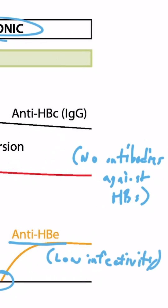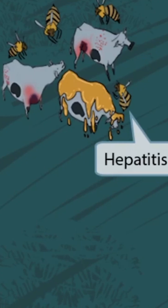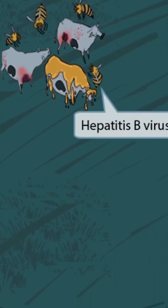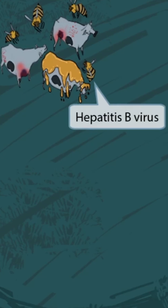Now let's dive into the image mnemonic to help you memorize all of the important details of hepatitis B. This scene takes place in a quaint village near some cows that are being attacked by giant bees. These cows have big liver-shaped spots on them, helping you think of the liver in hepatitis. The bees represent the 'B' in hepatitis B.